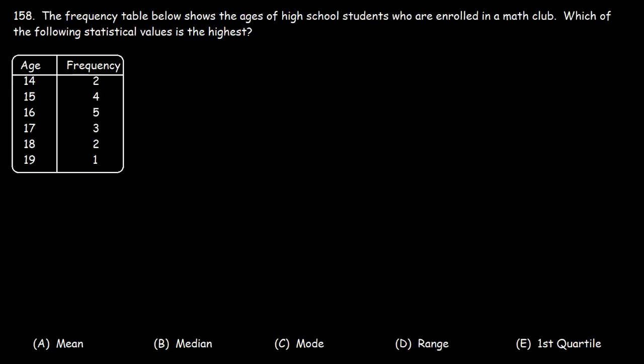Let's calculate each value. Let's start with the first one, the mean. So we said that the mean is equal to the sum divided by the number of items in our list.